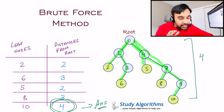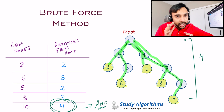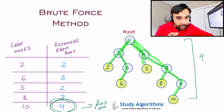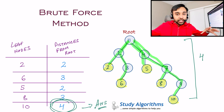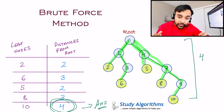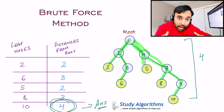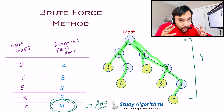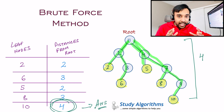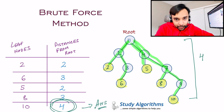Now this method works and it will give you a correct answer every time. But can you see the problem with this approach? What happens if your tree is very huge? What if you have a lot of leaf nodes — will you go on to calculate the distance between each of them? That would be very hectic and it would take a lot of time. So try to think of an efficient approach.